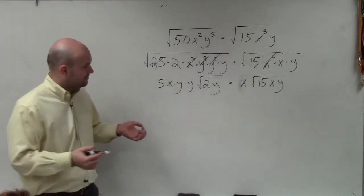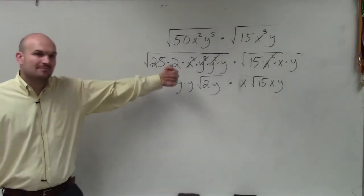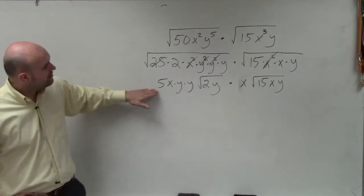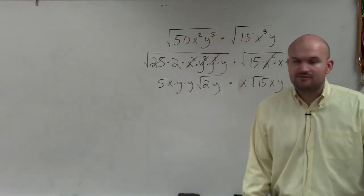Now that I've simplified everything, now I can multiply. And when we're multiplying, we multiply our coefficients, and then we multiply the numbers inside of the radicands.